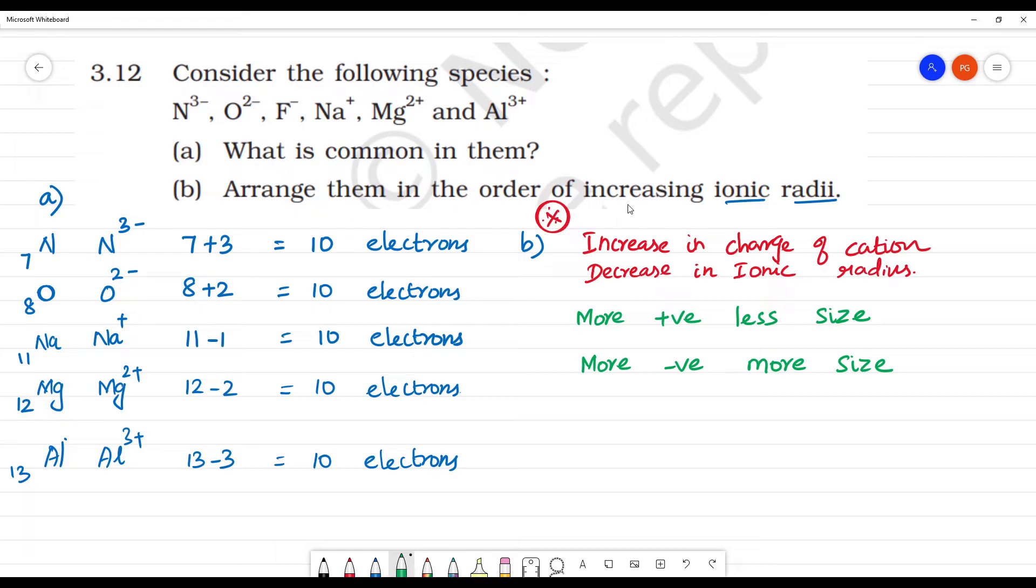First, arrange in increasing order. Positives have less size. Among the cations: aluminium 3+, magnesium 2+, sodium 1+. Where charge of cation increases, ionic radius decreases.